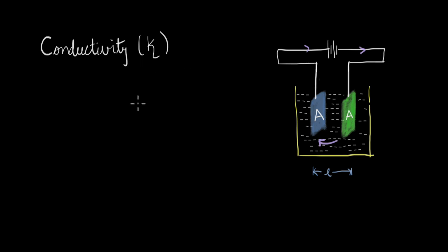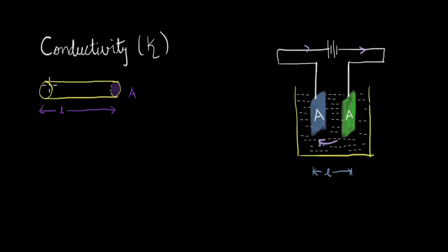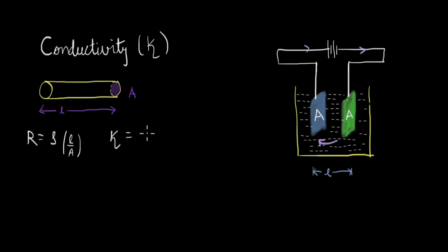We have looked at conductivity in detail in an earlier video. There, we compared the flow of electrons in a solution to the flow of electrons in a wire. We know that resistance is given by rho L over A, where the length and area are shown for this wire, and rho is the resistivity. So we defined conductivity as 1 over resistivity. If you take the length to be 1 cm and the area to be 1 cm², that gives us a unit volume, so resistivity is essentially the resistance of a unit volume. By the same reasoning, conductivity — which is the inverse of resistivity — is the conductance of a unit volume.